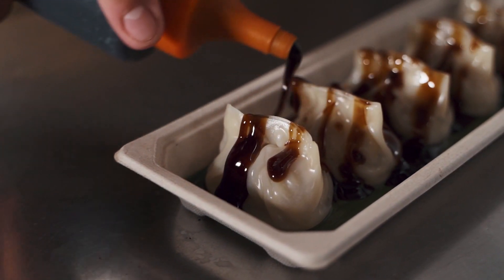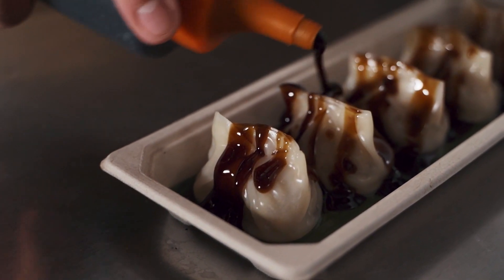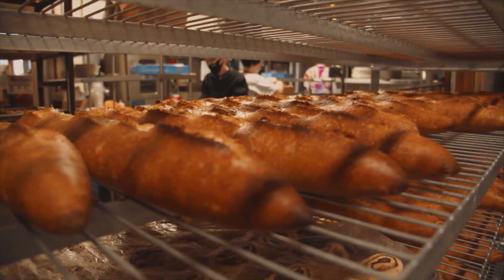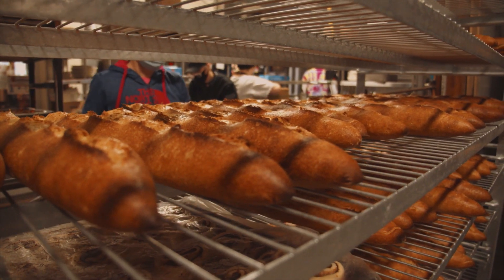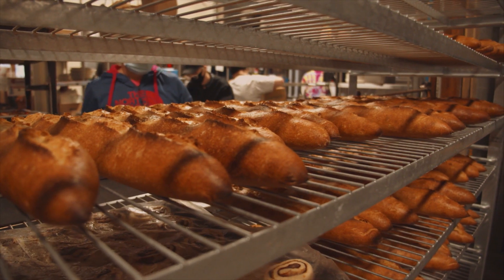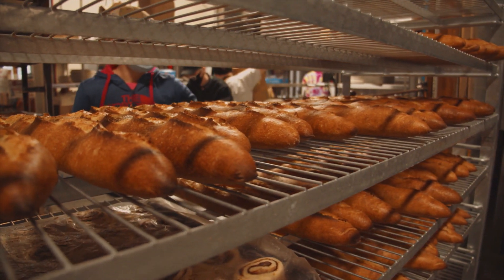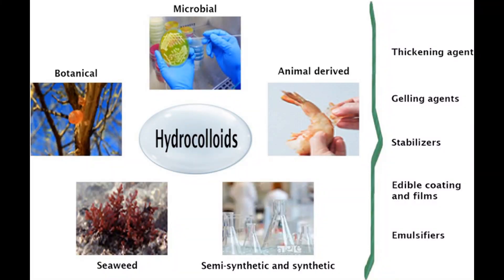Food hydrocolloids are substances that are added to food products to modify their texture, stabilize suspensions, and improve their overall quality. They are typically derived from natural sources such as seaweeds, plants, and microorganisms, and are used in a variety of food products including baked goods, dairy products, sauces, dressings, and meat products.